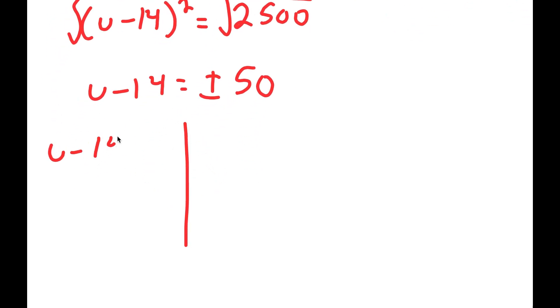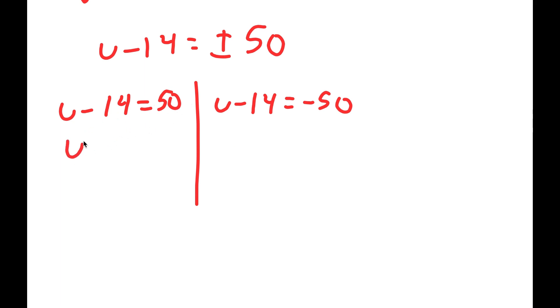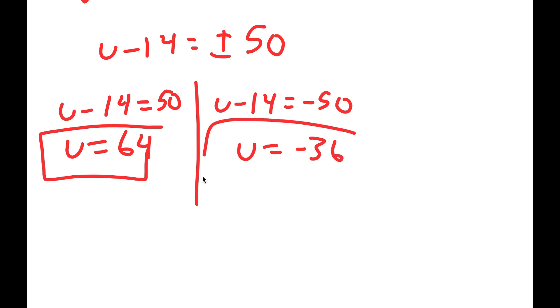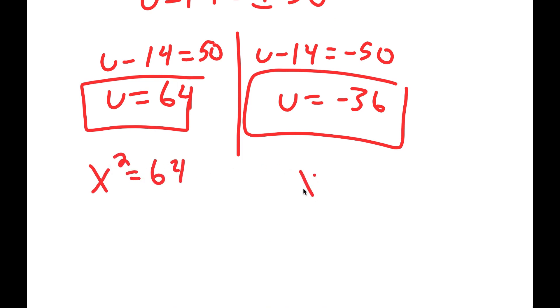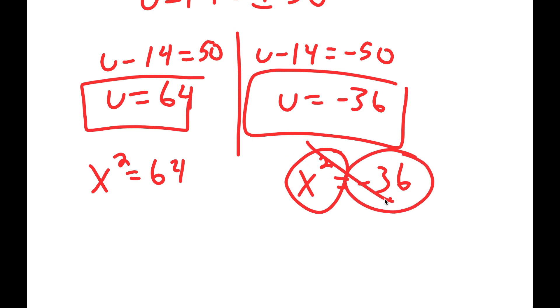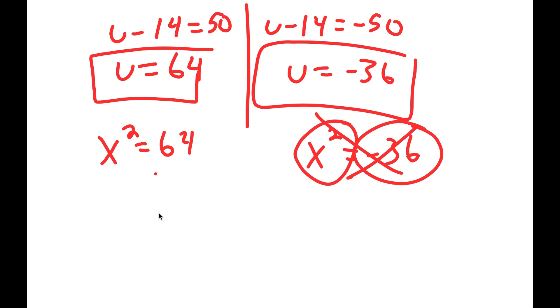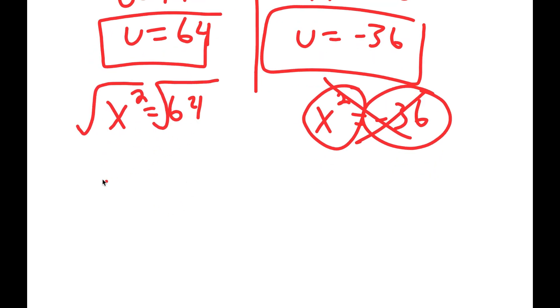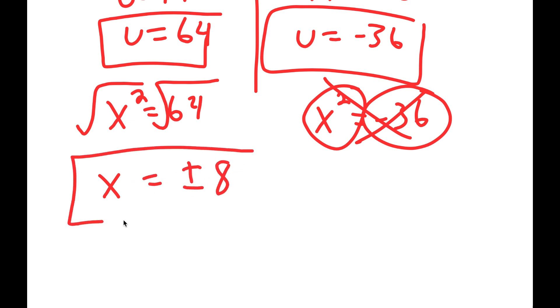Taking the square root on both sides, u minus 14 equals positive or negative 50, giving two equations. From u minus 14 equals positive 50, I get u equals 64. From u minus 14 equals negative 50, I get u equals negative 36. Remember, u equals x squared. So x squared equals 64, or x squared equals negative 36. We can't have a number squared equal a negative number, so x squared equals negative 36 is not valid. That means x squared equals 64 is my only real equation, and taking the square root gives x equals positive or negative 8.